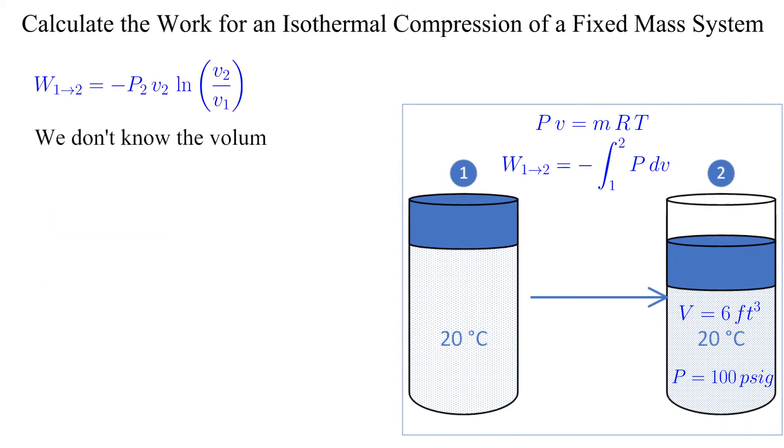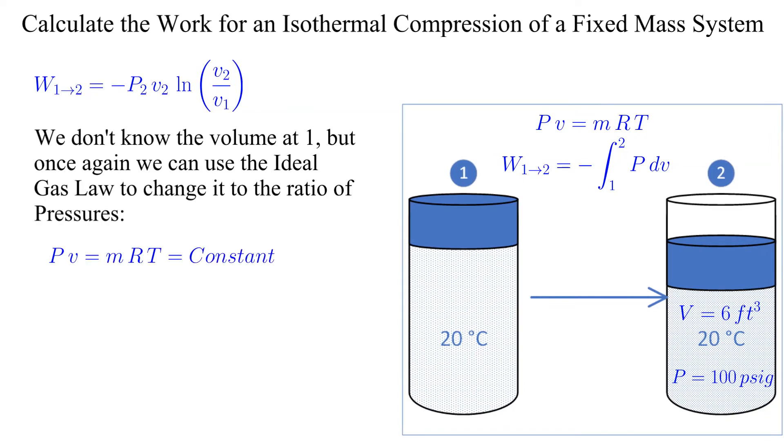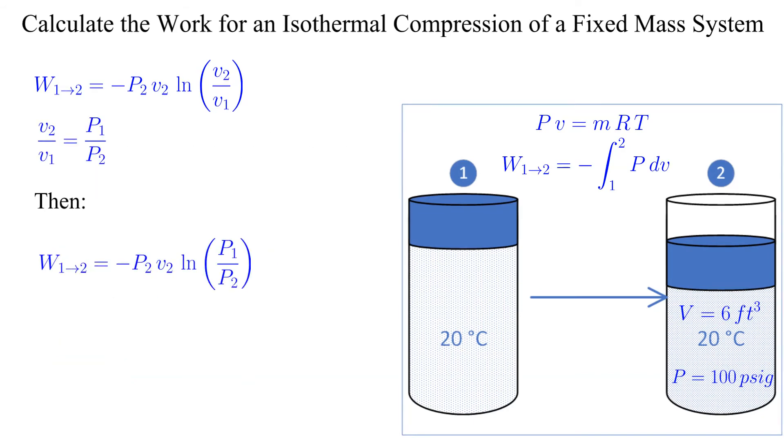The argument for the natural logarithm is also difficult since we don't know the volume at state 1. Luckily, once again, the ideal gas law saves us that extra work. We can substitute the ratio of pressures from state 1 to state 2 as shown. Now we make that substitution and obtain the results to calculate the necessary work.